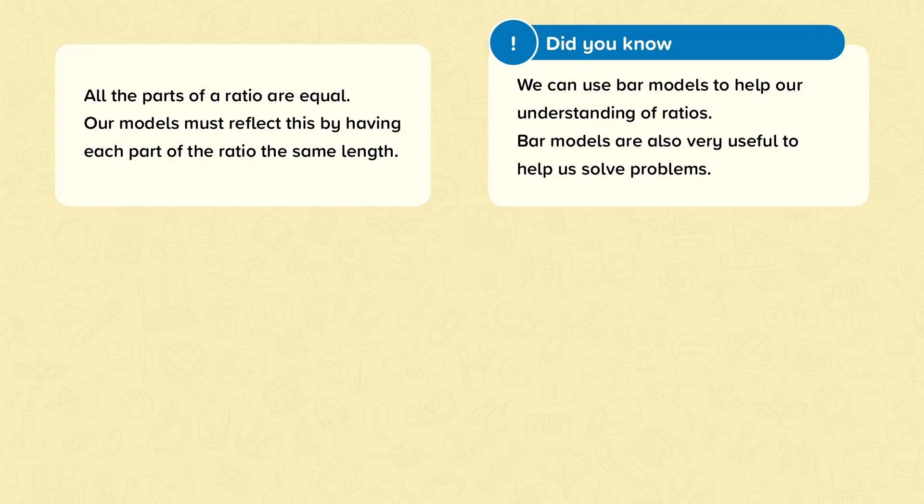At this point you should know what a ratio is. If we have two red squares and three blue squares, the ratio of red squares to blue squares is two to three.